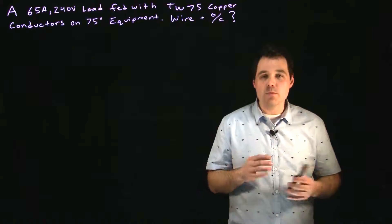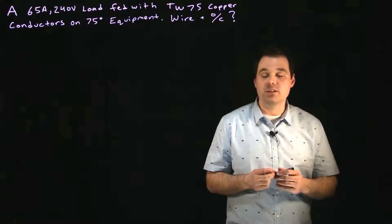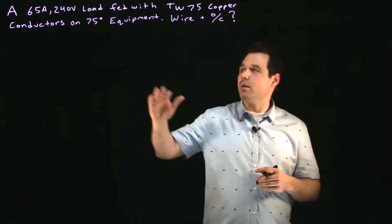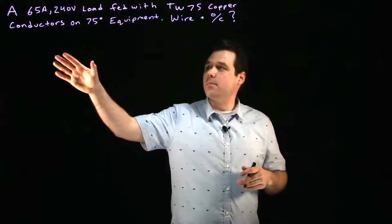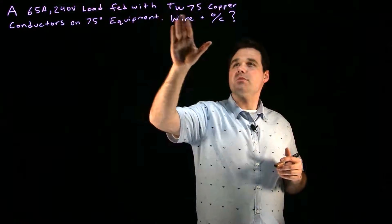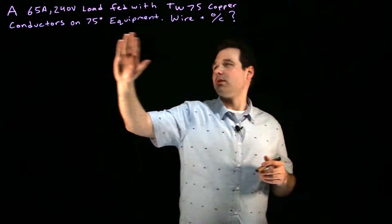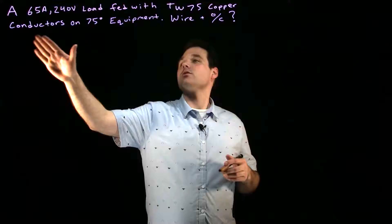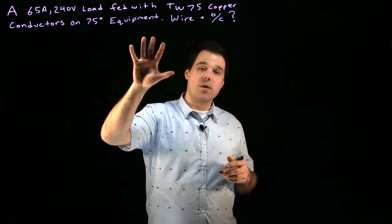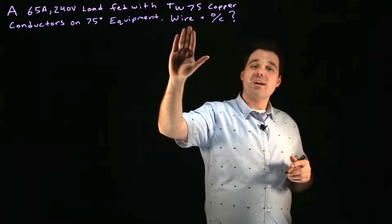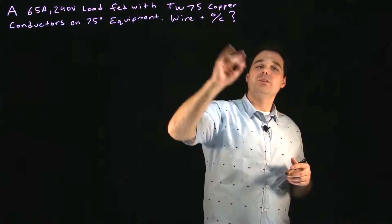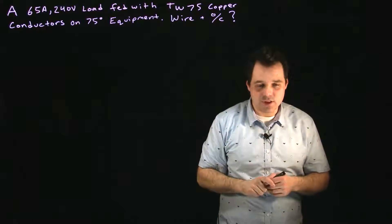There are a couple of important places in the codebook we need to go. The question here is: we have a 65-amp, 240-volt load fed with TW75 copper conductors on 75-degree rated equipment. We want to know what wire size is required for that load and what the overcurrent device size should be.